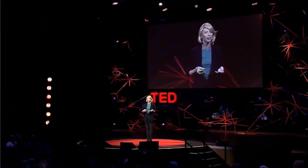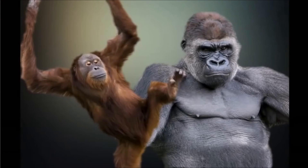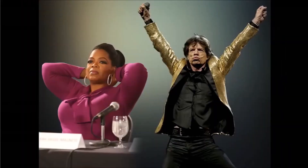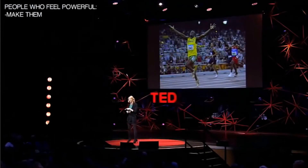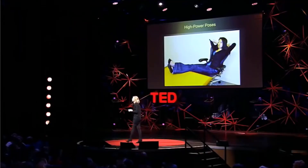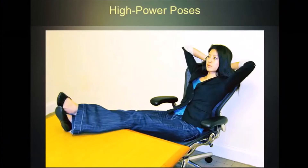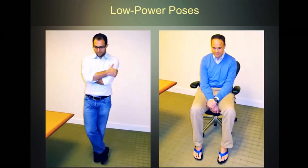She became especially interested in nonverbal expressions of power and dominance. In the animal kingdom, these are about expanding — you make yourself big, you stretch out — and humans do the same, both when they have power chronically and when they're feeling powerful in the moment. Powerful people tend to be more assertive and more confident. Physiologically, there are differences on two key hormones: testosterone, the dominance hormone, and cortisol, the stress hormone. They brought people into the lab, and participants adopted high-power or low-power poses for two minutes.